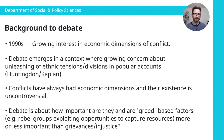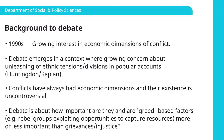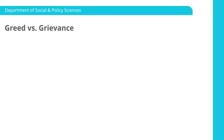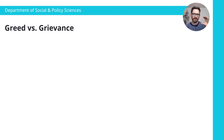The debate is really about how important are these factors, and in particular are these so-called greed-related factors — which has to do with questions of rebel groups making an analysis of the costs and opportunities of taking up arms against the state — are those kinds of factors more or less important than questions around identity and questions of people's sense that there's an injustice motivating them to take up arms. Broadly, this debate has been characterized in the academic literature as the greed versus grievance debate, though that characterization is a bit of a simplification and can be somewhat misleading, but it's a useful way to divide up various different perspectives.